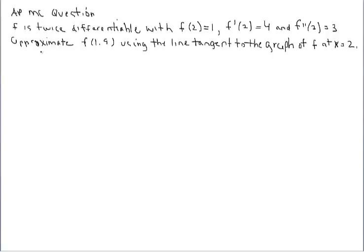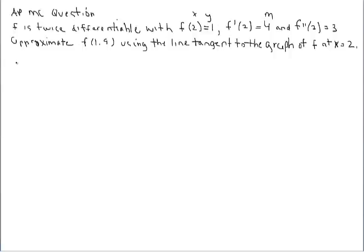That was the multiple choice question students had to answer. We're going to work through it without looking at the choices. We're going to approximate the functional value at 1.9. You might notice we don't have an equation for f, but that's okay — it actually makes this problem easier. We're going to use the tangent line. To write its equation, we have everything we need: the x-coordinate, the y-coordinate, and the slope. So we'll begin by using point-slope form.